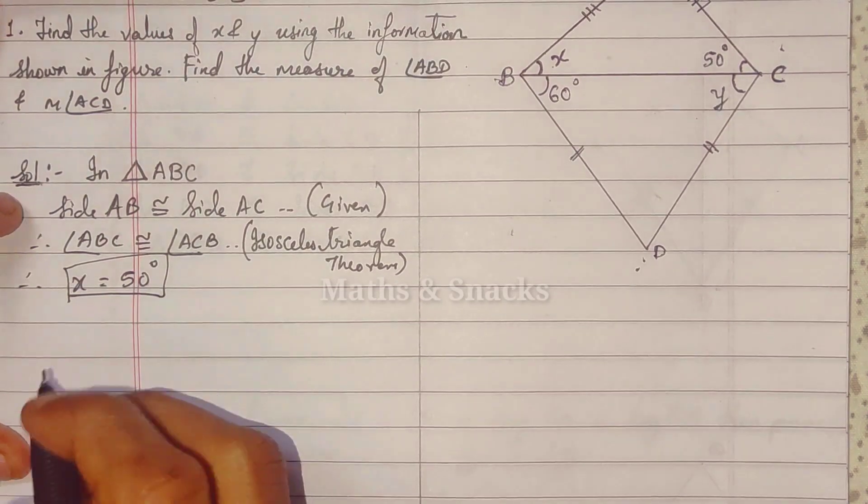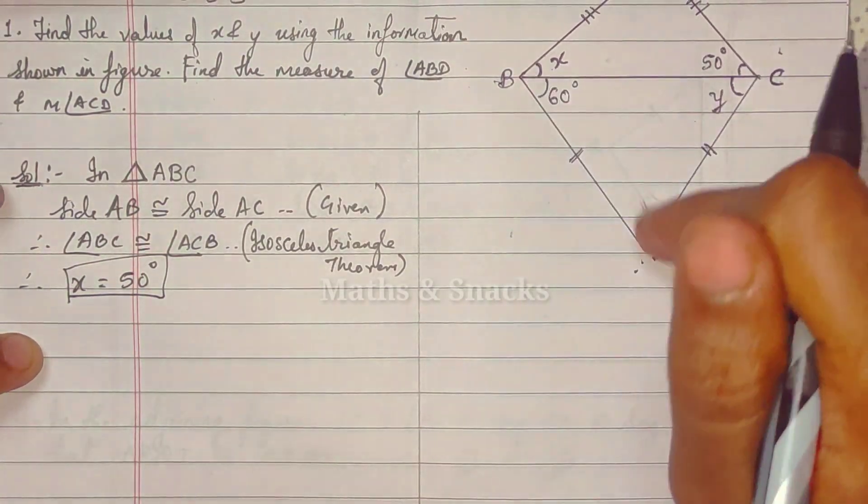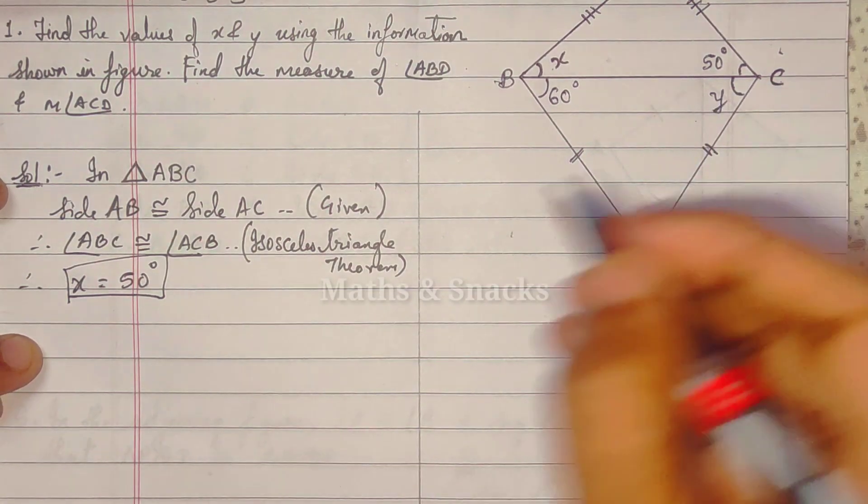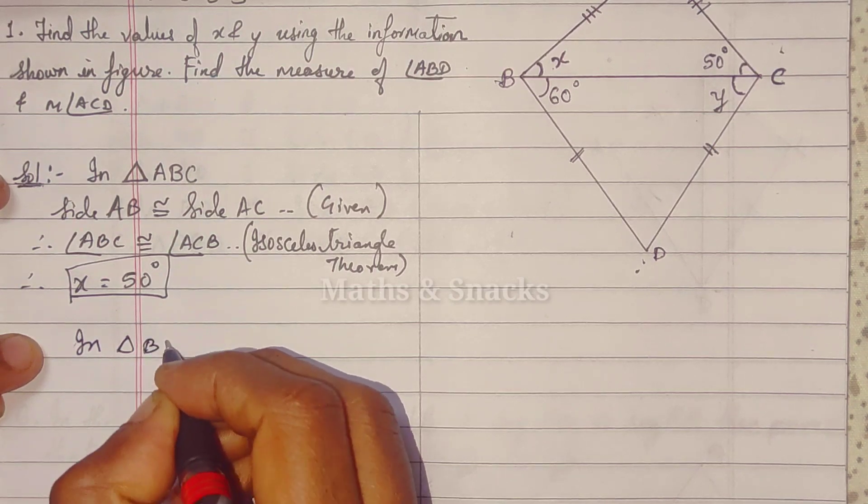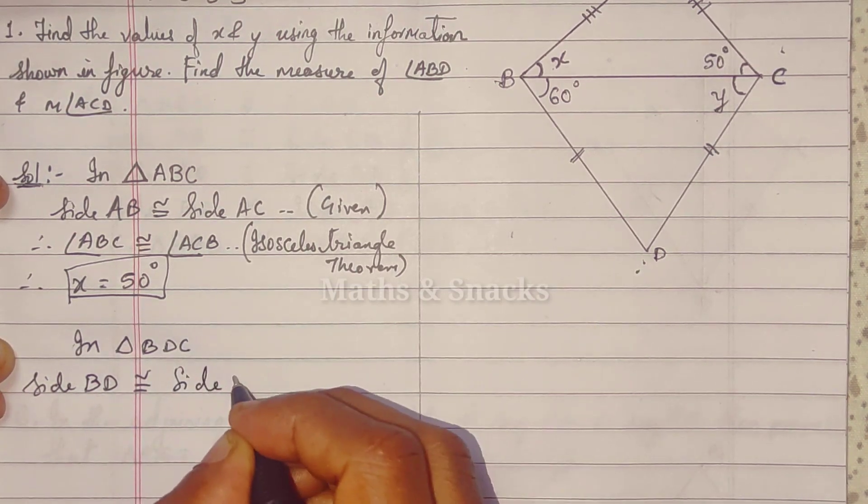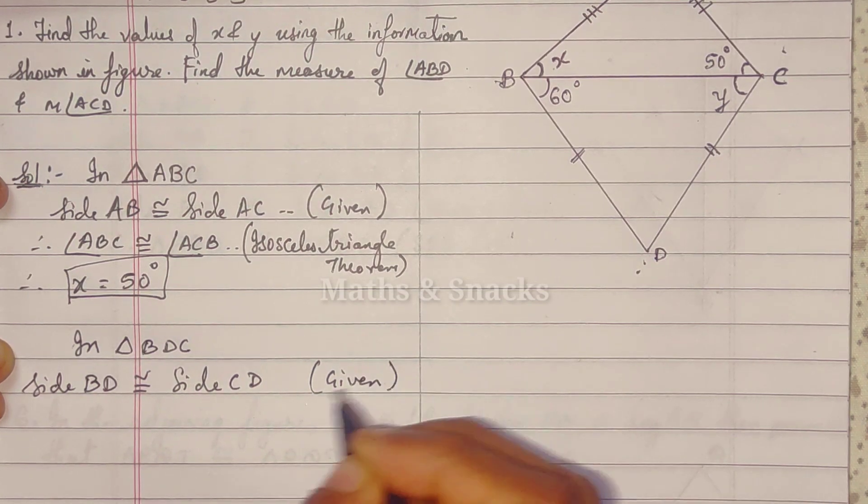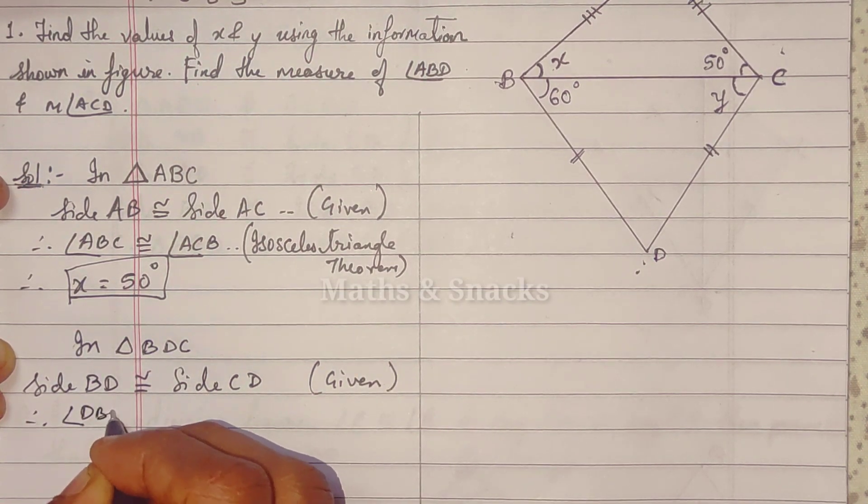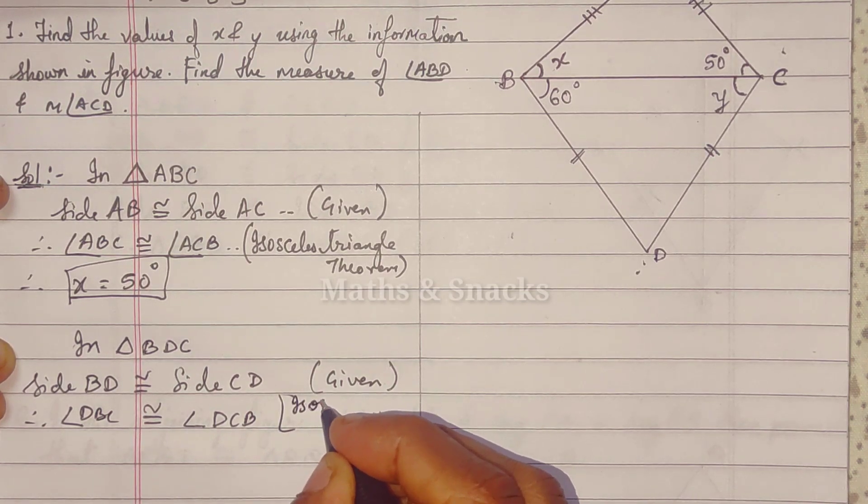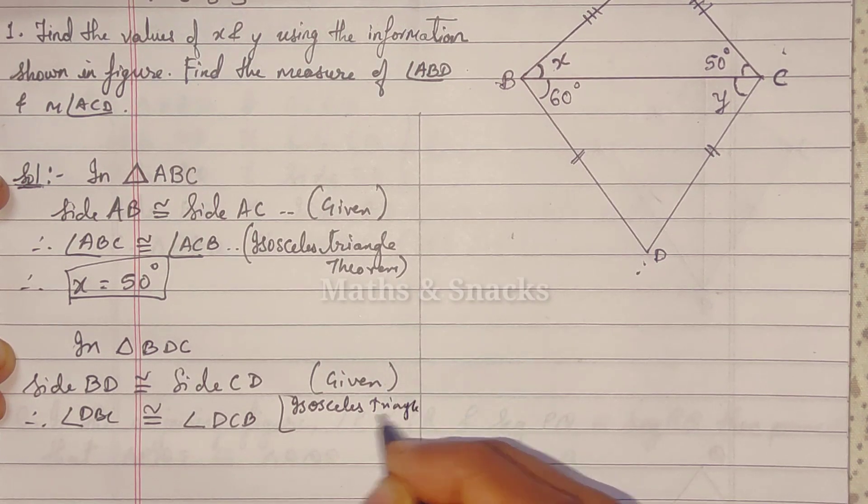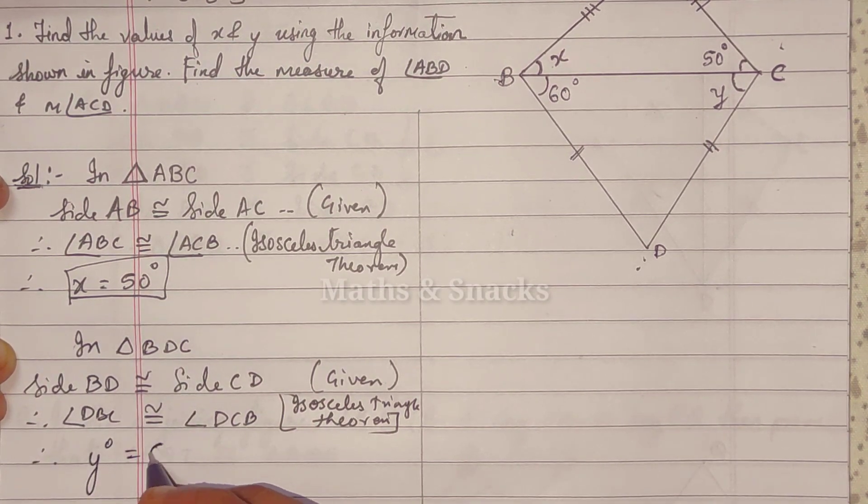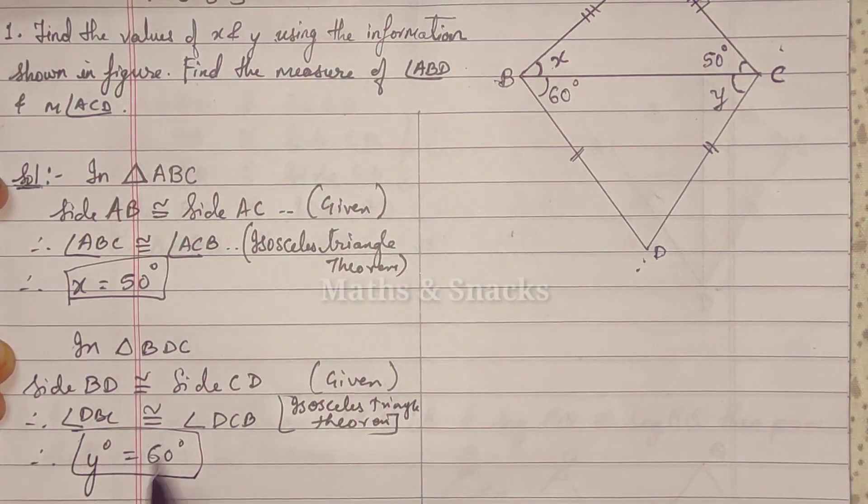Now, second, similarly, this bottom triangle also has two standing sides equal. So if this is 60 degrees, this is also 60 degrees. So in triangle BDC, side BD is congruent to side CD, given. Therefore, angle DBC is congruent to angle DCB. Same Isosceles Triangle Theorem. We have to give reasons whenever you show anything congruent. So therefore, y degrees equals 60 degrees. So we have found x and y.